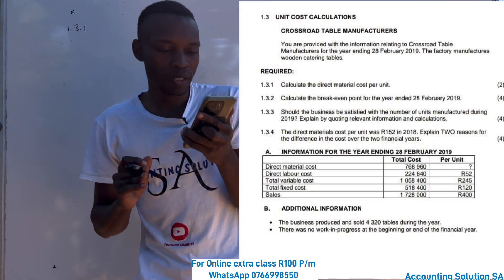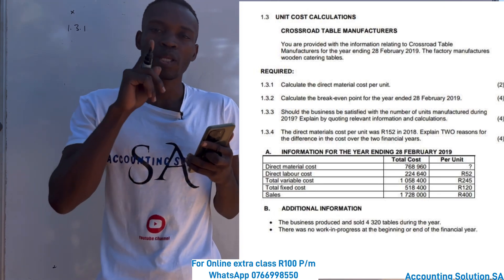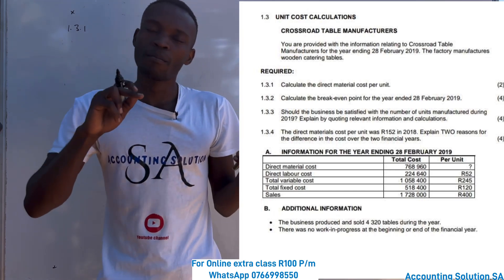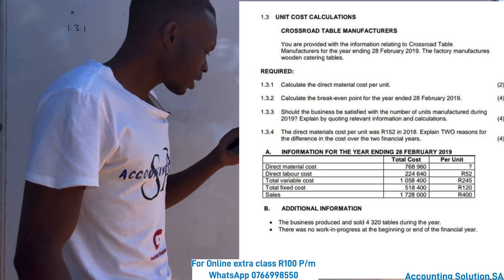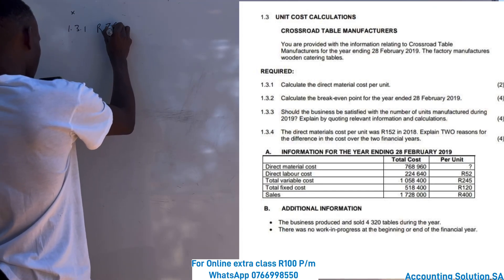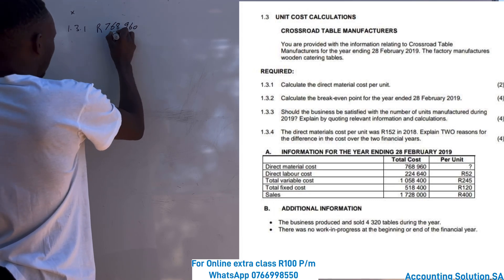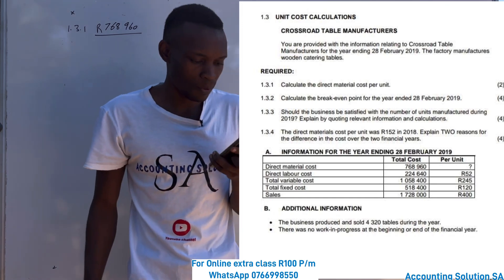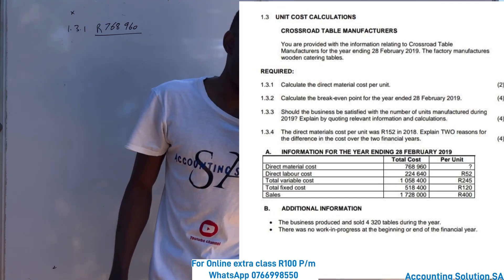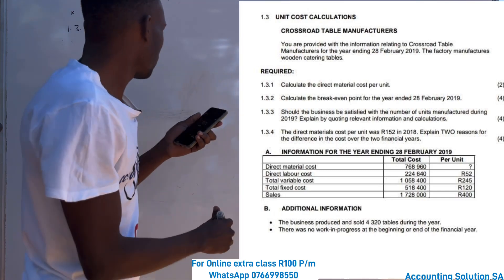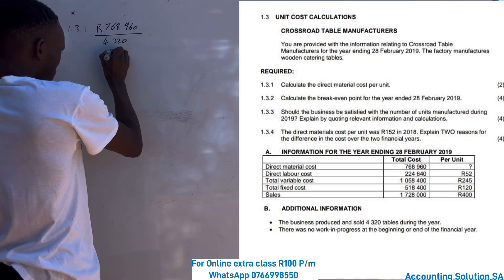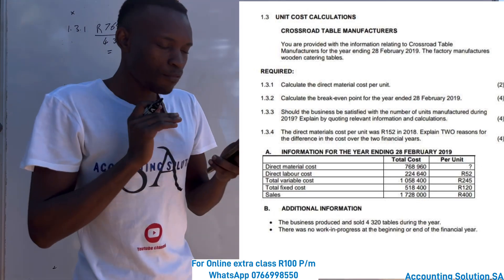To get a direct material cost per unit, a direct labor cost per unit, or total variable cost per unit, you have to identify the number of units that have been produced, because you just take the total and divide by the number of units produced. Let's take the direct material total cost — we are given the amount of 768,960. From the additional information, the business produced and sold 4,320 tables during the year, and there is no work in progress at the beginning or end. So we divide by 4,320.